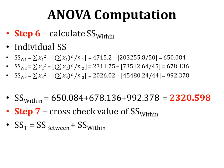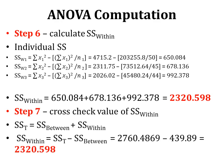We can cross-check these values because total variability equals between-sample variability plus within-sample variability. So SS within = SS total − SS between = 2760.4869 − 439.89 = 2320.598. This confirms that our calculation of the individual sum of squares and their sum for the within sum of squares is correct.